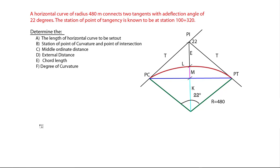A horizontal curve of radius 480 meters connects two tangents with a deflection angle of 22 degrees. The station of the point of tangency is known to be at station 100 plus 320.